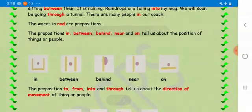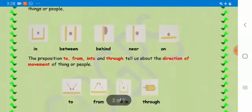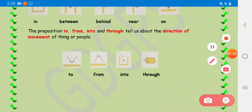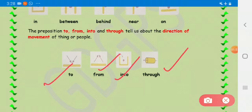Now let's move to the direction of movement. These prepositions tell us about the movement of the thing or the people or the person. So now let's observe the pictures. To, from, into, through. Right?